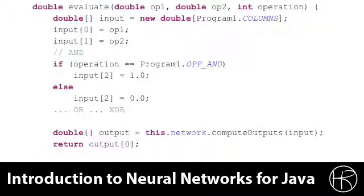The evaluate function is used to evaluate one of the operators using the neural network. You can see the evaluate function accepts two parameters, op1 and op2, which are the two operands used for the logical operator. The operation specifies a constant which specifies whether we're using the AND, OR, or exclusive OR logical operator. You can see that the input array is created first thing. It has the number of columns specified by the neural network.